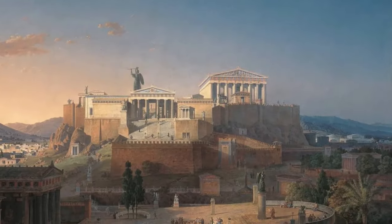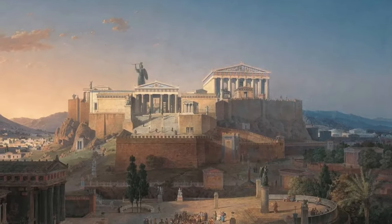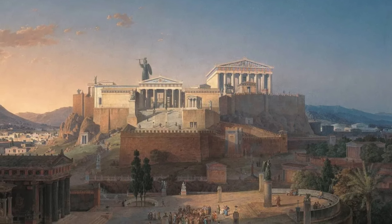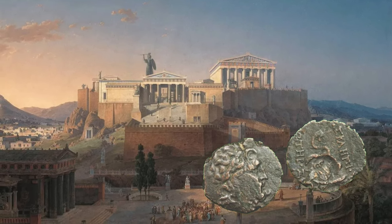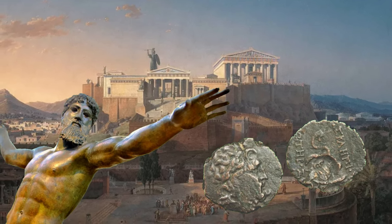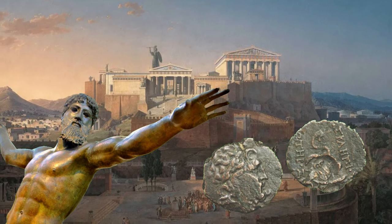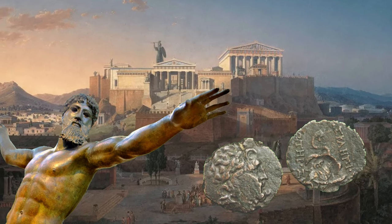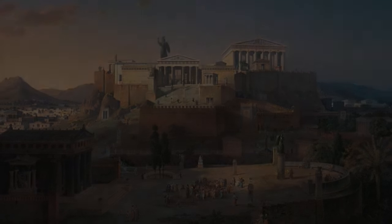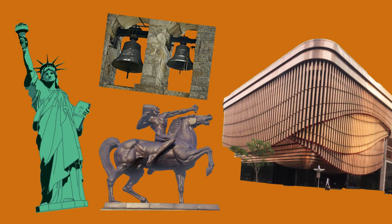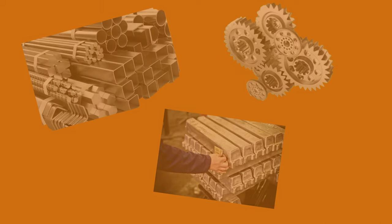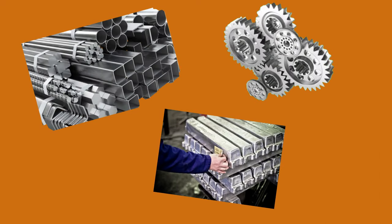The use of bronze continued throughout antiquity and into classical antiquity, with bronze coins, sculptures, and architectural elements being prominent examples of its enduring legacy. Today, bronze remains significant in various artistic and industrial applications, though it has been largely replaced by other materials like steel and aluminum for many industrial uses.